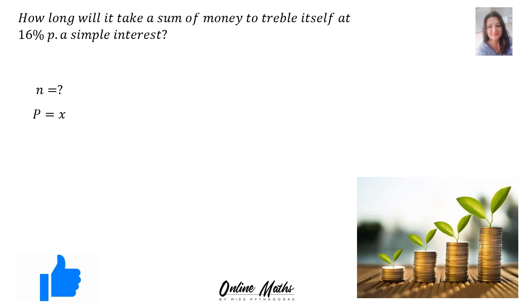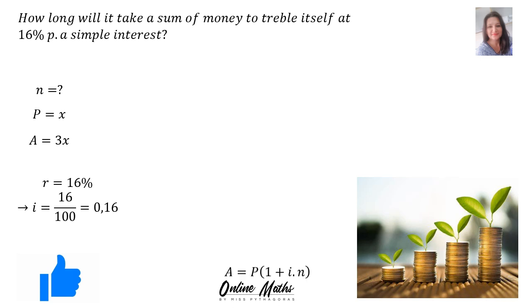How long will it take a sum of money? So we make P equal to x. To treble means times 3, so our A-value is 3 times x. r is 16%, but remember there's an i in the formula. Therefore i = 16 divided by 100 = 0.16.